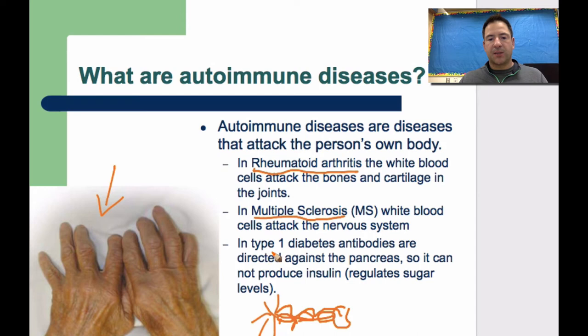The last type is type 1 diabetes. And so type 1 diabetes, what happens here is there's antibodies that are directed towards or against the pancreas and in the pancreas that's where we produce insulin. So insulin's role is to regulate blood sugar levels. And so what's happening is they'll spike if the insulin isn't present or dip. So that antibodies are directed against the pancreas. The pancreas can't produce enough insulin and therefore it can't regulate blood sugar levels.